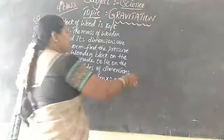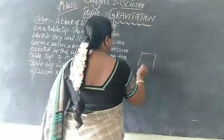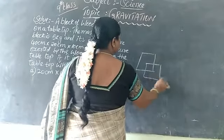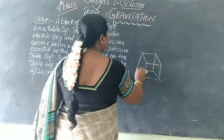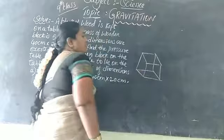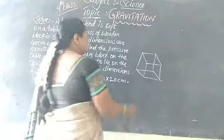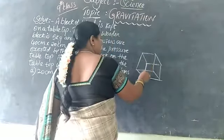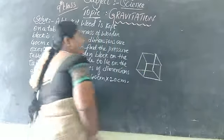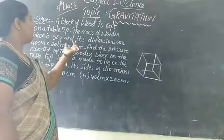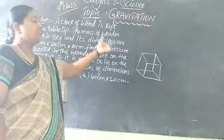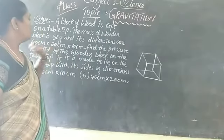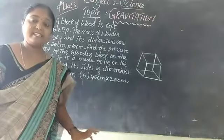What do you mean by the dimensions, children? If you make a block, it will have 3 dimensions. Here this is the length, this is the width, and this will be the height. So the 3 dimensions are 40 cm, 20 cm, and 10 cm.